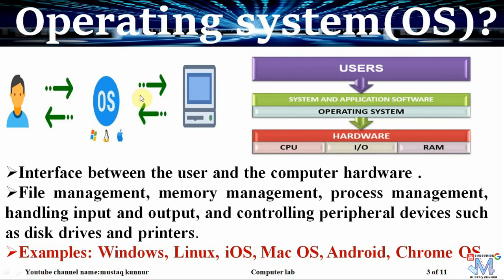When we buy a new laptop, a computer, or any cell phone, we must install an operating system. Without installing an operating system, we cannot run that device. Here in this figure, we can see that after installation of the operating system, we can install the application programs. Once we install the operating system and application programs, then the user can communicate with the computer hardware.